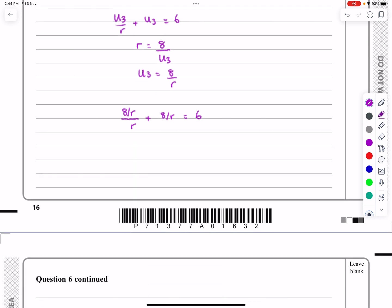And it's just a matter of rearranging all that to try and get to the equation that I wanted. Let's look at that first term, 8 over R divided by R, that's 8 divided by R twice, isn't it? So that's 8 over R squared plus 8 over R is equal to 6.